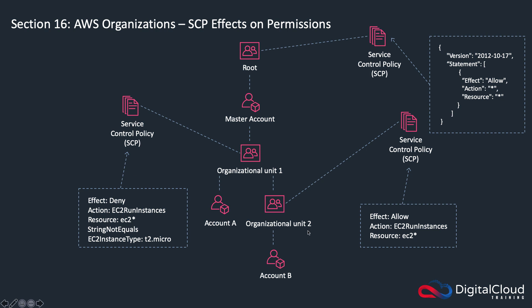OU2 has a separate account in it, and for this example I've applied an SCP which allows EC2 run instances on any resource - effectively allowing any user to launch any EC2 instance. But it doesn't matter that this account has an SCP that allows launching EC2 instances, because somewhere in the hierarchy there's a policy that doesn't allow it. The most restrictive policy will apply. So even though you've explicitly allowed EC2 instances to be run at one level, the deny rule at the higher level will take precedence.